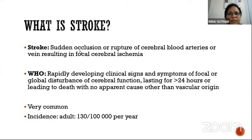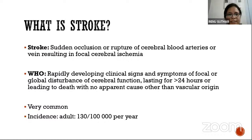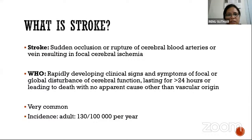Coming to definitions: what is stroke? According to WHO, stroke is defined as rapidly developing clinical signs and symptoms of focal and global disturbances of cerebral function lasting for more than 24 hours, or leading to death, with no apparent cause other than vascular origin. This definition is very important — it should be rapid, clinical signs and symptoms lasting more than 24 hours, and explainable with vascular origin.